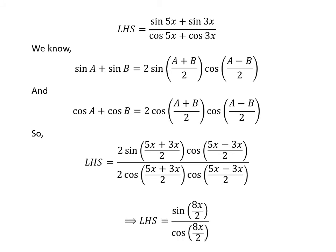Cancelling out the common factor of 2 and cosine of (5x-3x)/2 in the numerator and the denominator gives us the left hand side equal to sine of 8x/2 upon cosine of 8x/2.